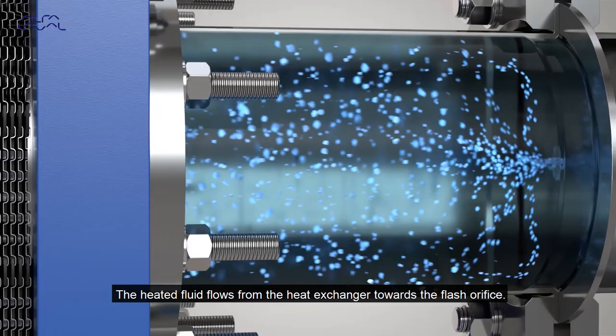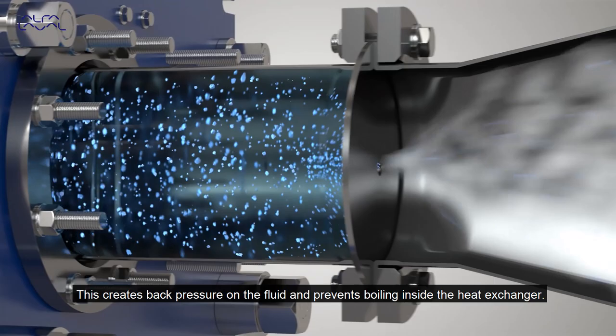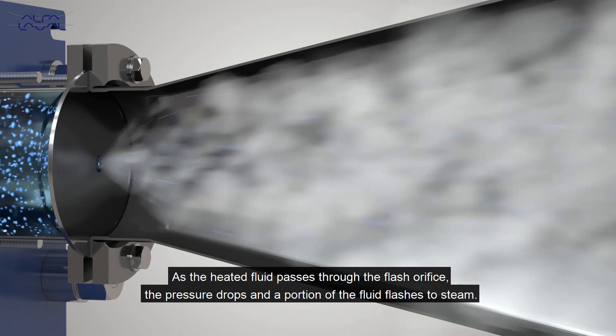The heated fluid flows from the heat exchanger towards the flash orifice. This creates back pressure on the fluid and prevents boiling inside the heat exchanger. As the heated fluid passes through the flash orifice the pressure drops and a portion of the fluid flashes to steam.